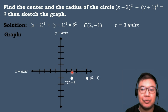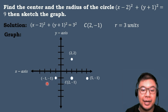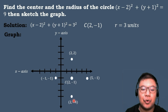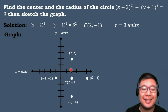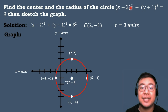Going to the left: count 1, 2, 3 — the coordinates are (-1, -1). Going downward: count 1, 2, 3 — the coordinates are (2, -4). These are the four radius points of the circle. The last step is to draw a smooth curve connecting the four radius points to form the circle. Therefore, this is the graph of the circle with equation (x - 2)² + (y + 1)² = 9.